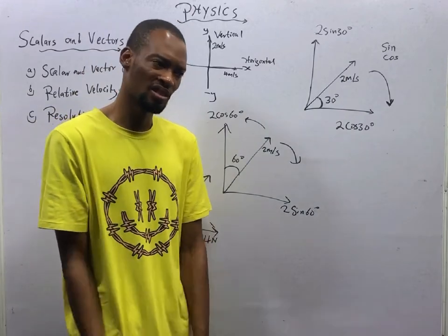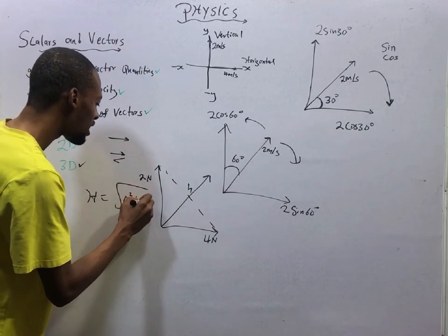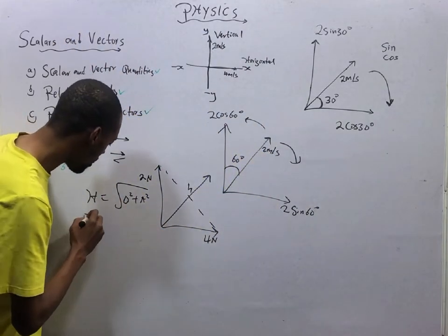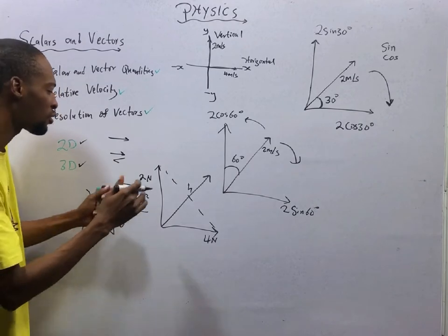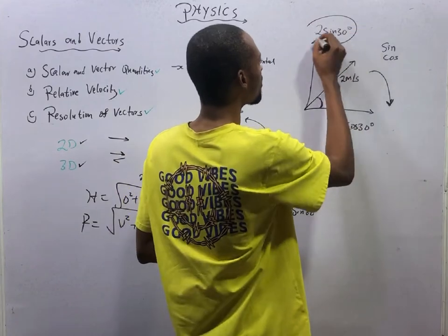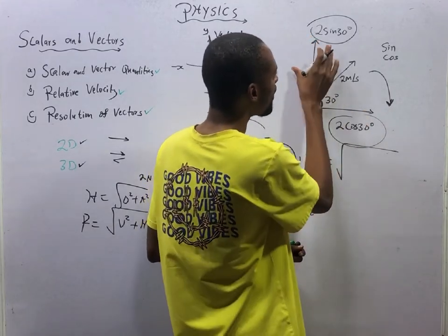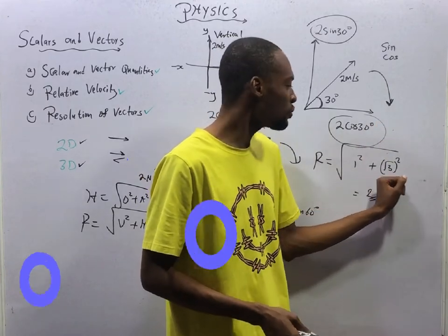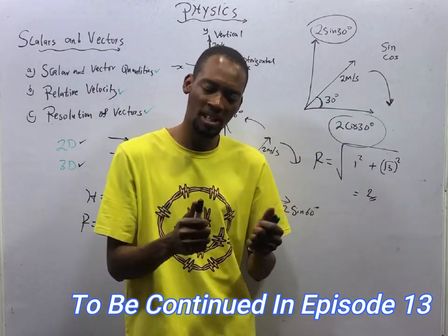From right-angle triangle theory using vectors, we know that the hypotenuse equals the square root of opposite squared plus adjacent squared. Similarly, when resolving vectors, the resultant R equals the square root of the vertical vector squared plus the horizontal vector squared. In this vector, the vertical component is 2 sin 30 and the horizontal is 2 cos 30. So the resultant equals the square root of (2 sin 30)² + (2 cos 30)². 2 sin 30 is 1, and 2 cos 30 is √3. So √(1² + (√3)²) = √(1 + 3) = √4 = 2. This resultant is the same thing as the magnitude of the vector.